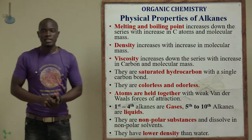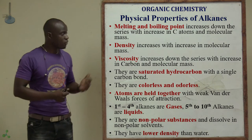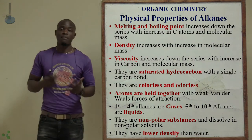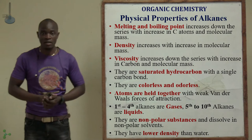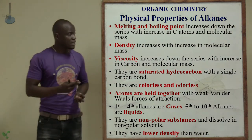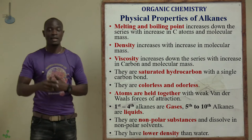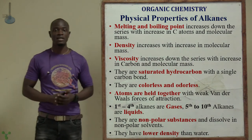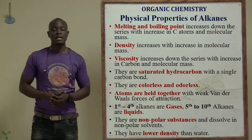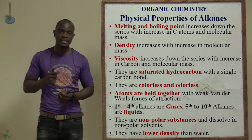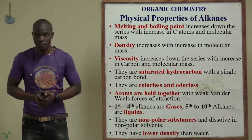Let's look at the physical properties of alkanes. This table summarizes some of the physical properties of alkanes, beginning with the fact that the first four members are gases, and the last six members are liquids.